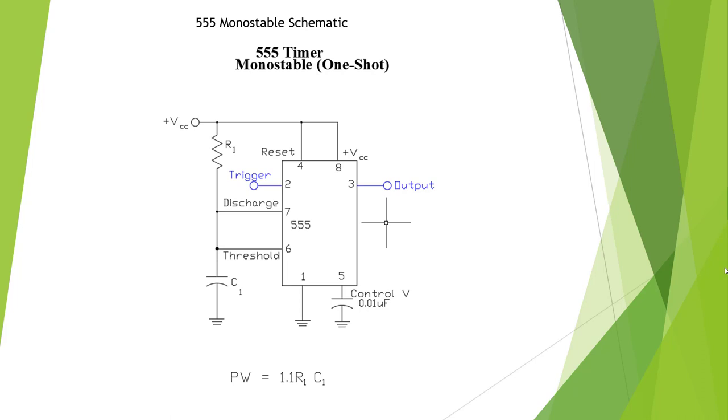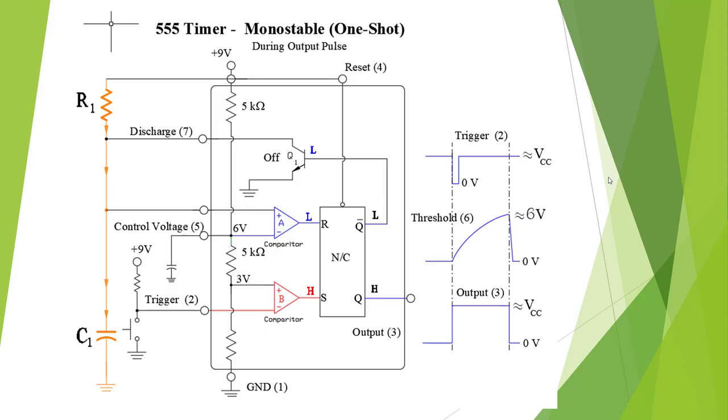It's called a re-triggerable pulse that we could re-trigger many times. Once we trigger it, we release it and it will time out and make a time pulse based on this formula.